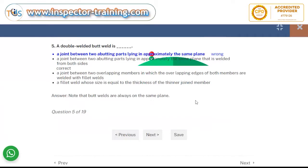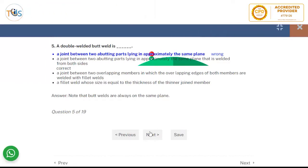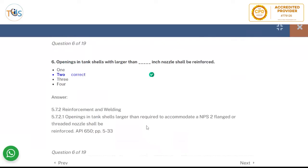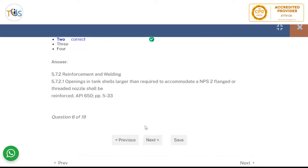Double welded butt joint is a joint between two abutting parts lying in approximately the same plane. So here the same plane. All the abutting are always in the same plane. Opening in tank shells with larger than two inch nozzle shall be reinforced. So this is coming from API 650 reinforcements and welding. So anything of nozzles bigger than NPS2, flange or threaded nozzle, shall be reinforced.